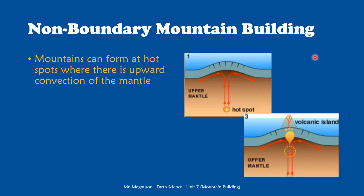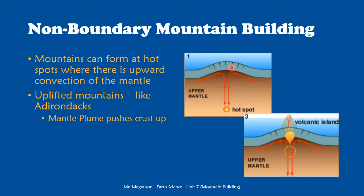The first thing, shown in picture number one, is the hotspot or mantle plume pushing up against the crust, but the crust isn't melting — it's just being pushed up. This is going to form uplifted mountains. We have the mantle plume pushing the crust up but not causing any melting, so we don't have any volcanism.